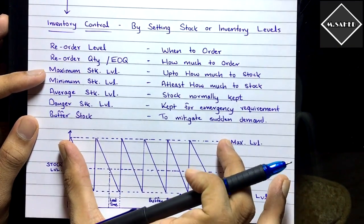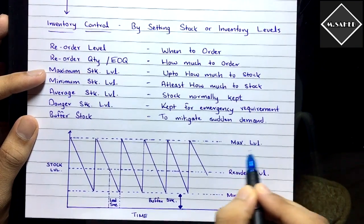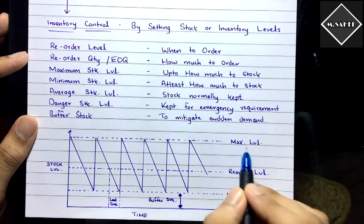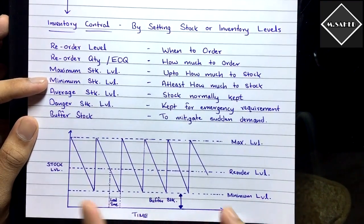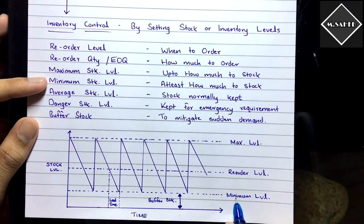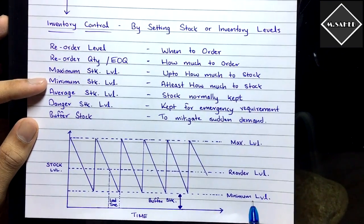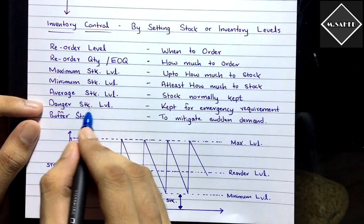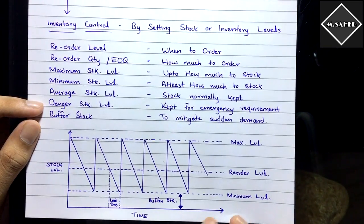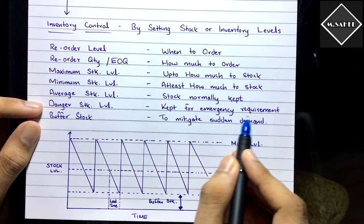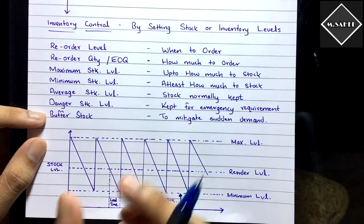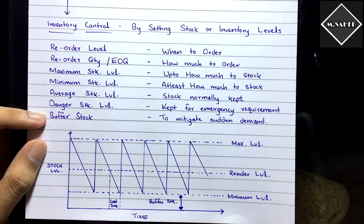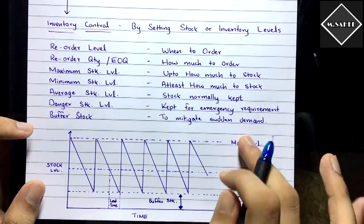Maximum stock level is the level we must not exceed — going above it causes wastage and unnecessary cost. Minimum stock level is the level our inventory must not fall below — it's the least amount we must always stock. Average stock level is what is normally kept in the warehouse. Danger stock level is below the minimum level, kept for emergency requirements. Buffer stock is the minimum inventory below the minimum level, maintained to mitigate sudden demand.